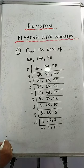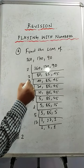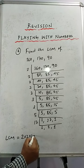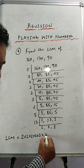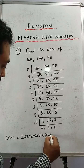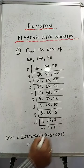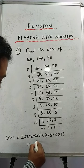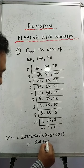So what is the LCM then? The LCM equals 2 to the power 5, into 3, into 5, into 17. So it's a big LCM. The answer would be 24,480, students.